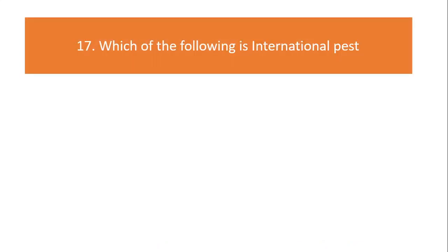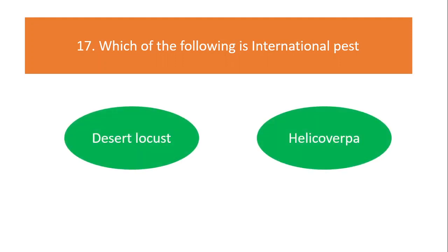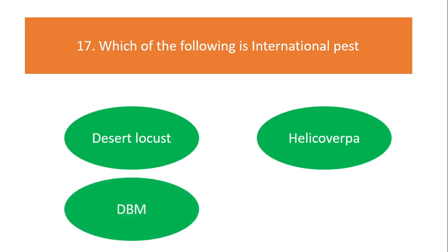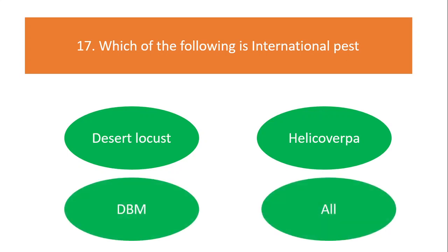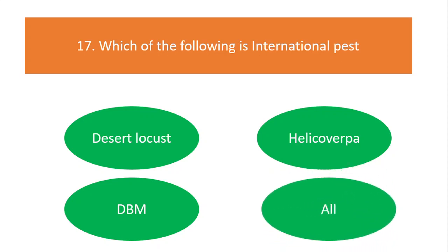Which of the following is an international pest? Desert locust, Helicoverpa, diamond back moth, or all of the above? The answer is all of the above.